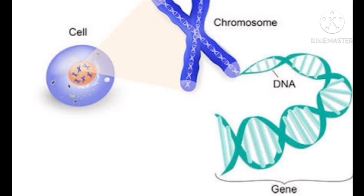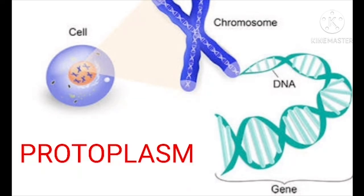The nucleus, in addition to its role in inheritance, acts as the control center of the activities of the cell. The entire content of a living cell is known as protoplasm — it includes the cytoplasm and the nucleus. Protoplasm is called the living substance of the cell.